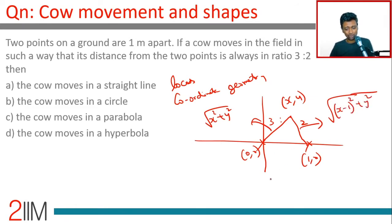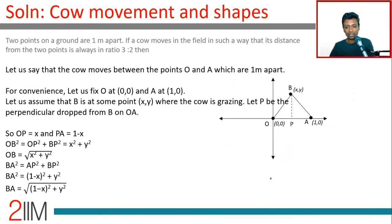Simplify that, we'll get an expression for (x,y). So square root of x square plus y square over square root of (one minus x) the whole square plus y square equals three by two. What do we do in this case? Square both sides.